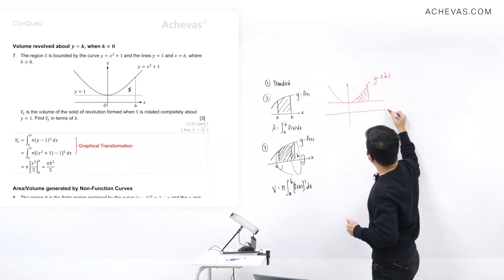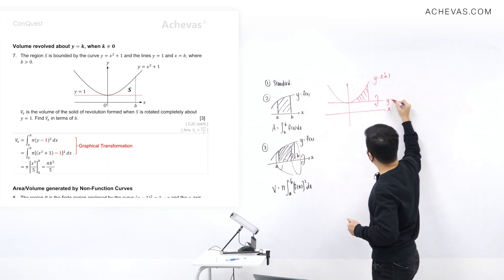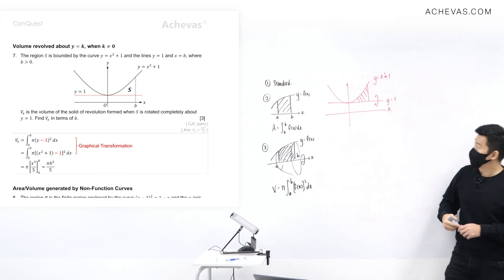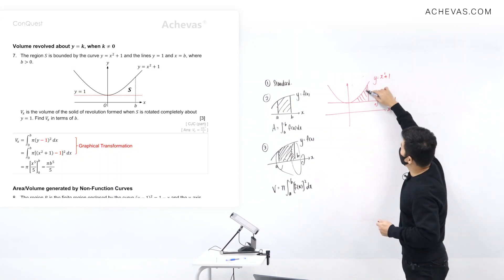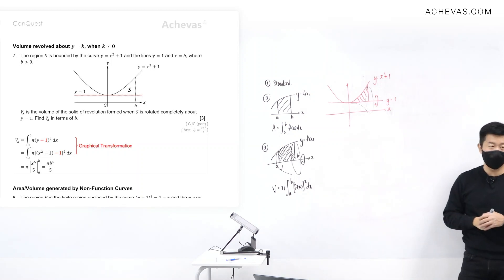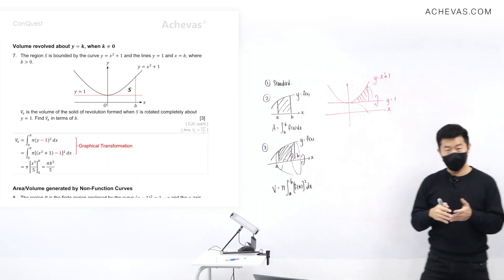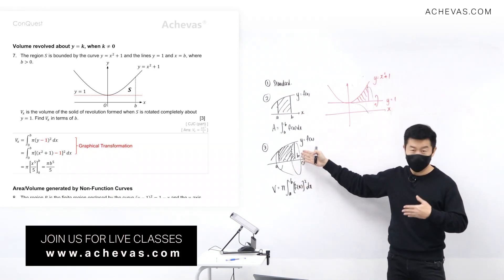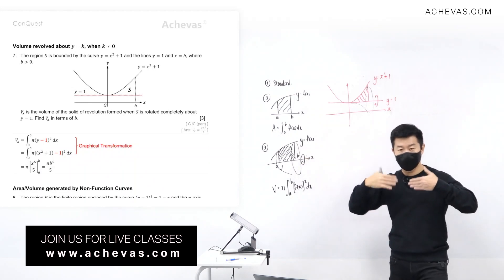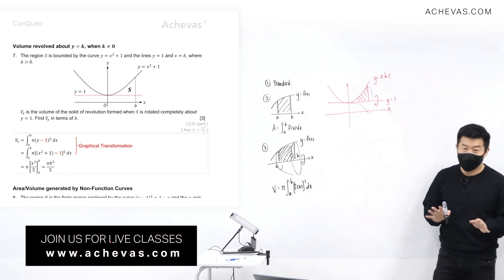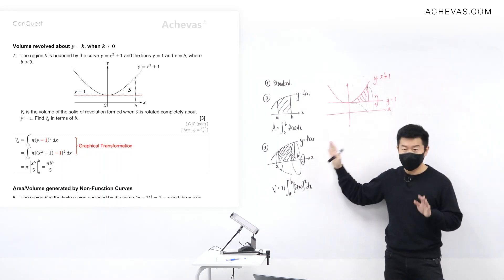This region here — this is the x-axis — and this region is going to be rotated about the line y=1, so you are expecting a shape like this. The issue is I cannot apply the standard formula here because in order to apply it, the region must be rotating about the x-axis. You cannot rotate about any arbitrary axis using that formula directly.